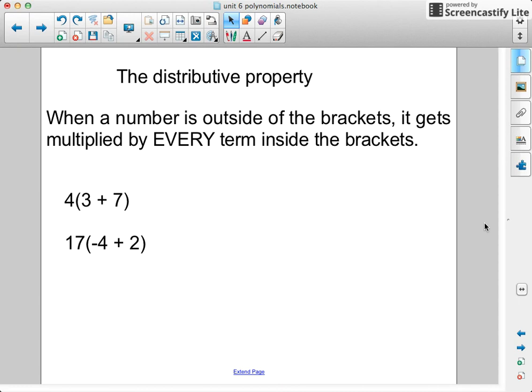When a number is outside of the brackets, it gets multiplied by every term inside the brackets. So this says 4 multiplied by 3 plus 7. In this case you can multiply this 4 by the 3, you'd get 12, and 4 times 7, which is 28. Make sure you watch your signs.